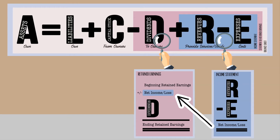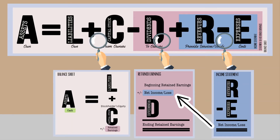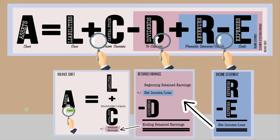From there, the balance sheet is prepared. The ending retained earnings is transferred to the stockholders' equity section of the balance sheet. The balance sheet is assets equals liabilities plus stockholders' equity.